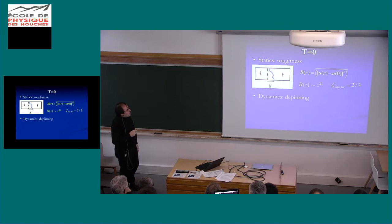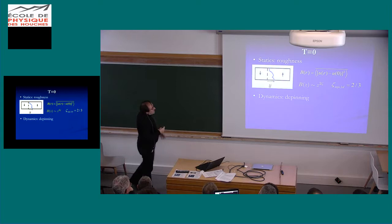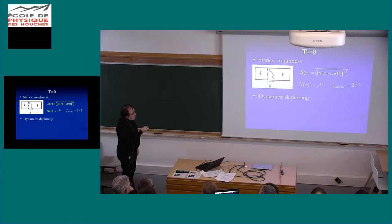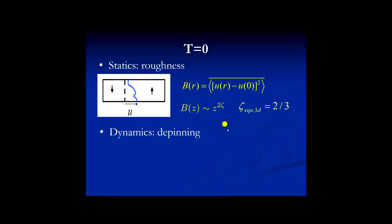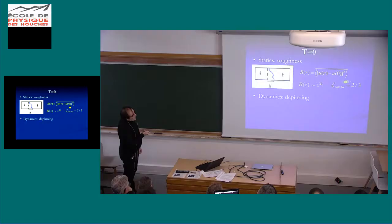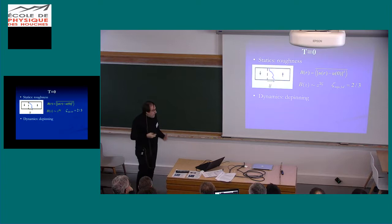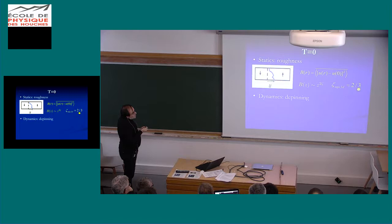So at T equals zero, namely if we don't put any temperature, I would say many things are well understood. It doesn't mean that everything is understood, but many things are well understood. And in particular, it's well known that the wall, because of the presence of disorder, will be rough. And you can measure the relative displacement correlation function. It grows as a power law with an exponent, which in 1D is known exactly and in higher dimension can be computed in particular by functional renormalization technique as, for example, Pierre and Kai have done extensively. In 1D, this is related to KPZ equation and essentially this exponent is known exactly and it's two-thirds.